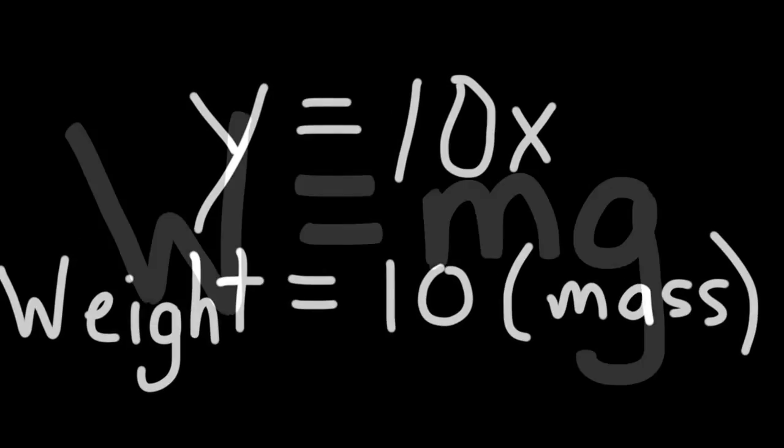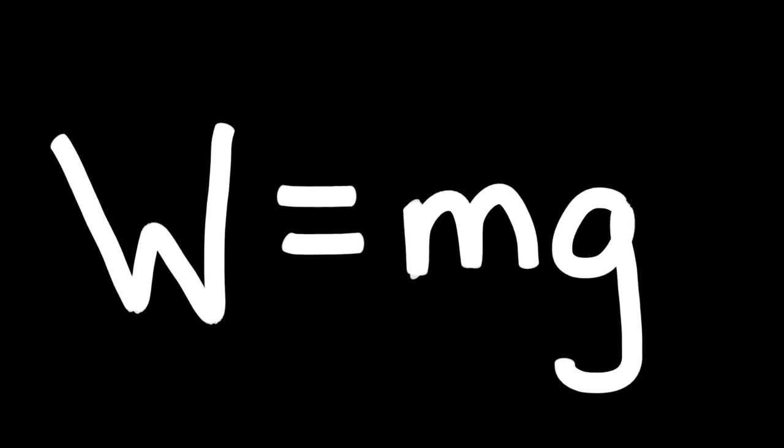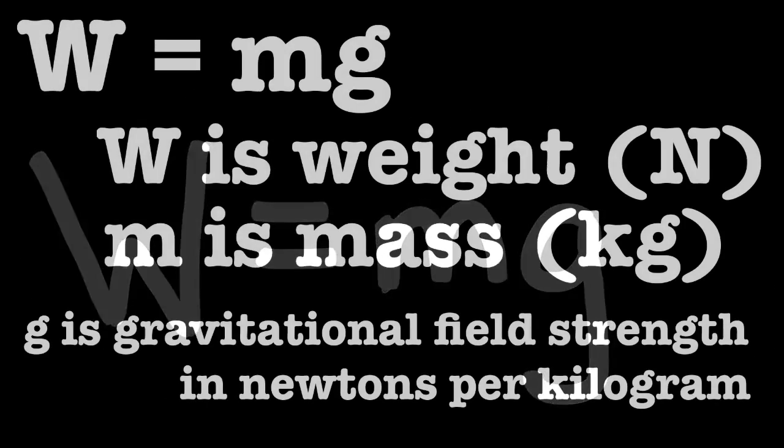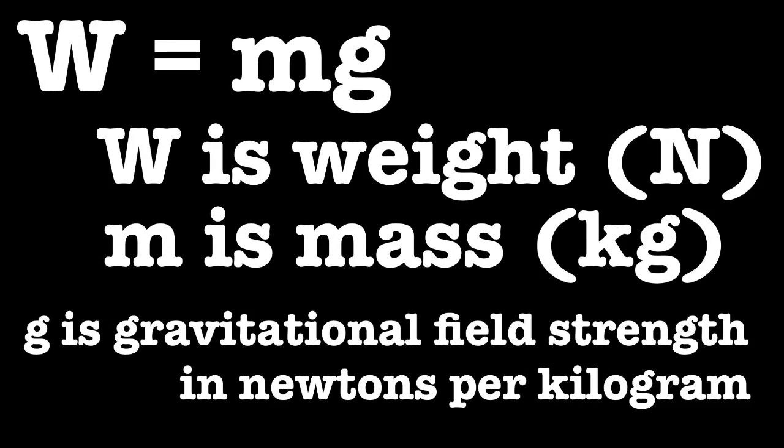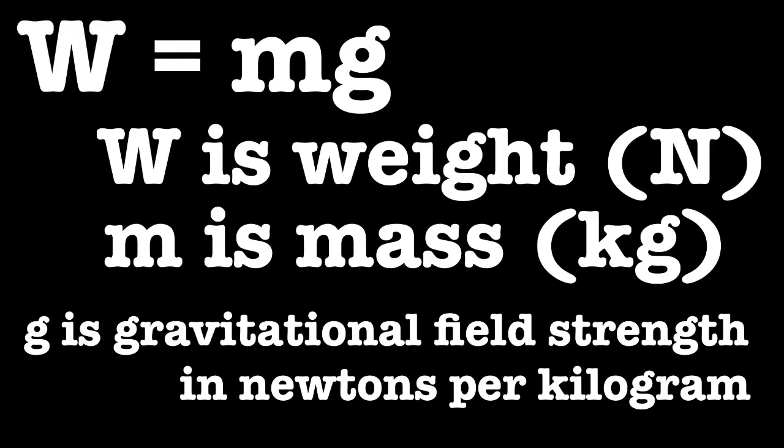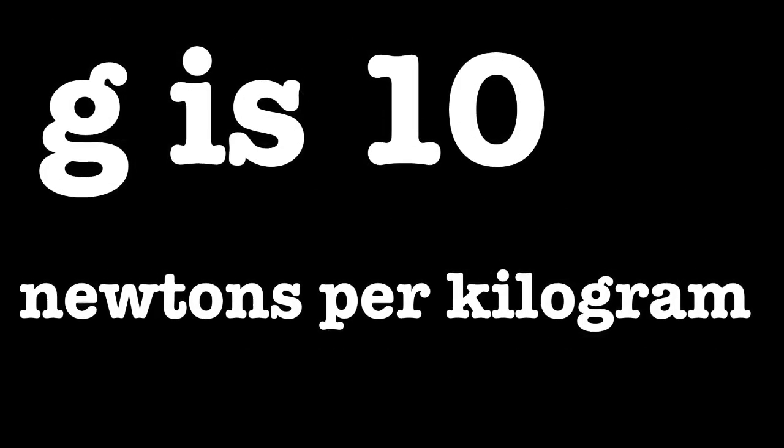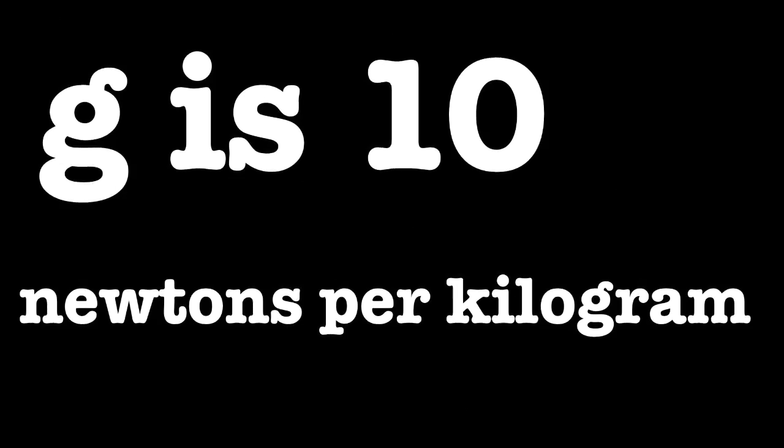By doing that, you can derive the common equation w equals mg, where w stands for weight in newtons, m stands for mass in kilograms, and g is what we call the gravitational field strength in newtons per kilogram. The gravitational field strength here at the surface of Earth is 10.